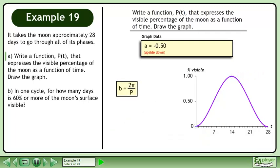Now we'll find the b parameter, use the formula b equals 2pi over p. The period is 28, plug this in for p. This reduces to pi over 14.